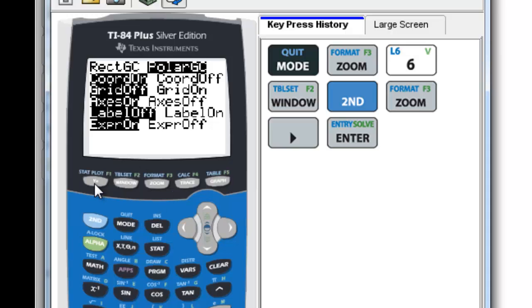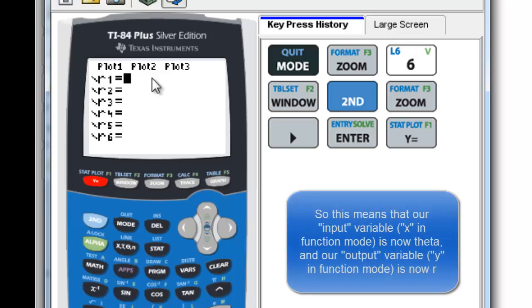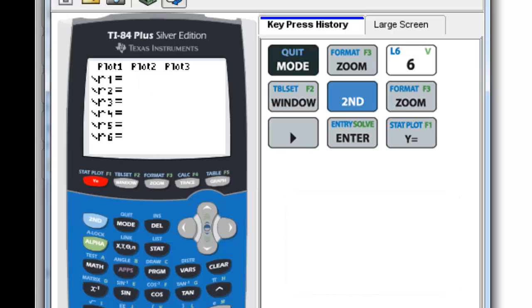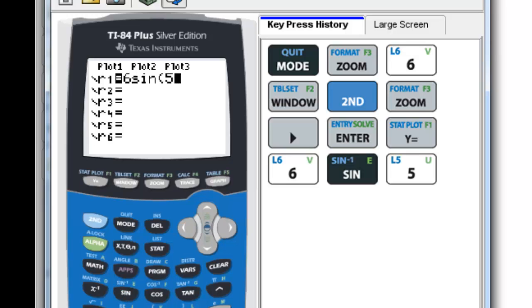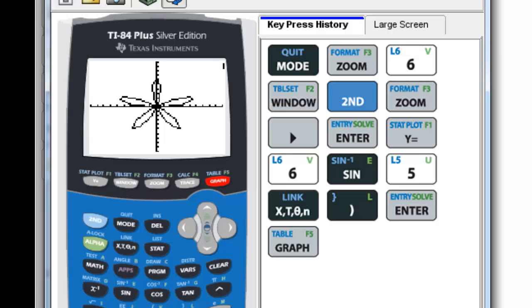Now, we can go in and input an equation. So let's go to y equals. We can see right away that it's different. Instead of having y1, we have r1. And our equations, instead of using an x variable, we're going to be using a theta variable. So let's start with a simple equation. Let's put in 6 sine 5 theta. And see what our graph looks like. Wow.